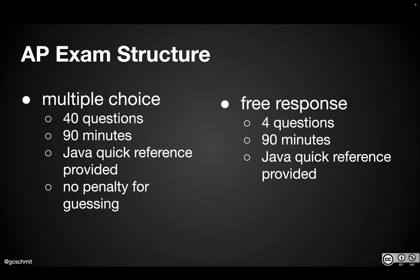After the multiple choice my understanding is you get a short break and then you have the free response. There are four questions. You have 90 minutes for that portion as well and you continue to get to use the AP CSA Java Quick Reference. Both halves of the exam are equally weighted. So yes there are 40 questions on multiple choice and 36 points on the free response but they balance those out when they calculate your raw score.